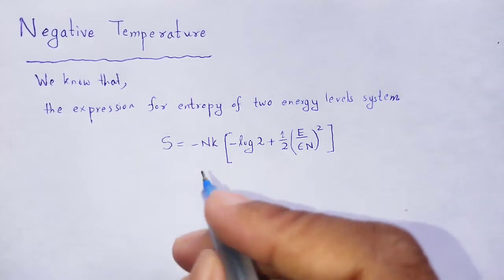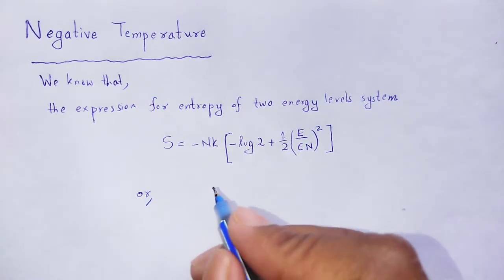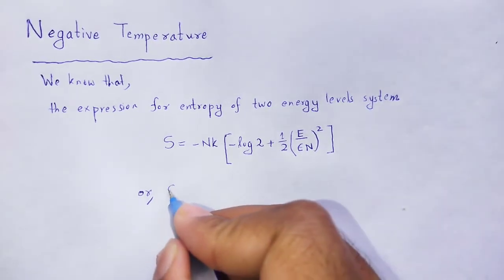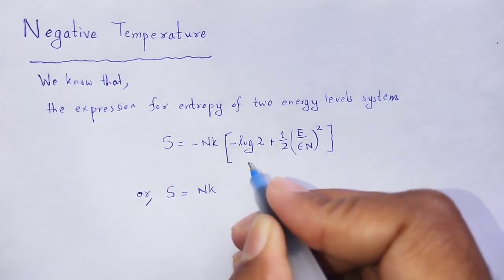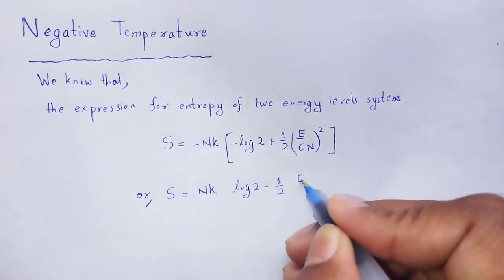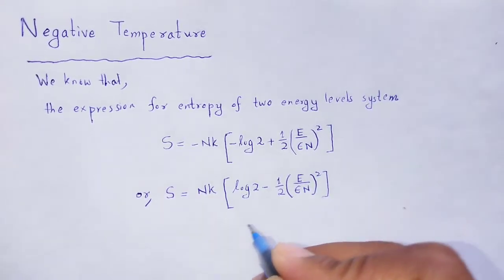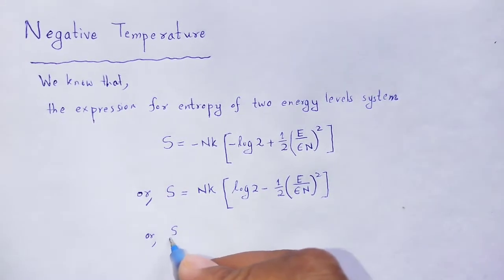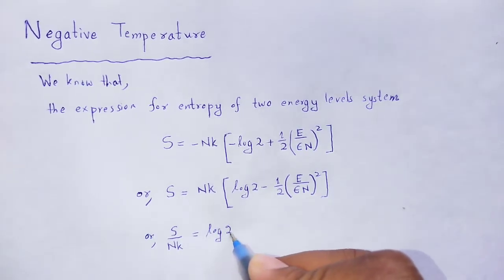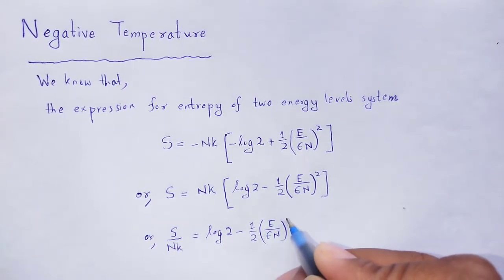We have already discussed this in the previous video. From that expression, if the negative sign is multiplied within the bracket, it will be: n k times log 2 minus half E divided by epsilon into n, whole square. Or, S divided by n k is equal to log 2 minus half times E divided by epsilon n, whole square.